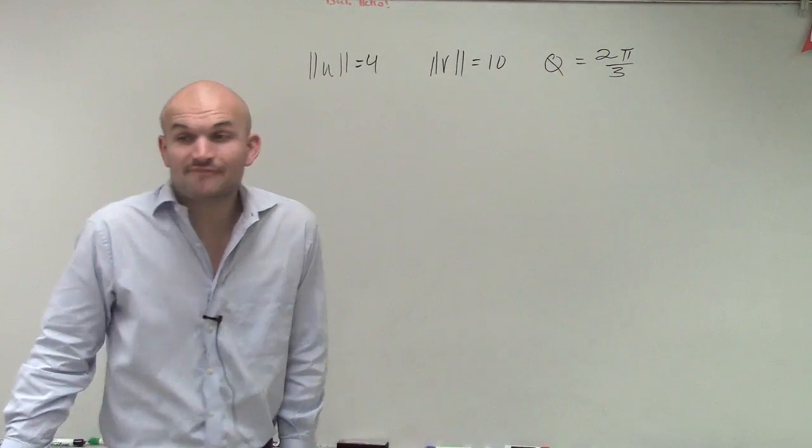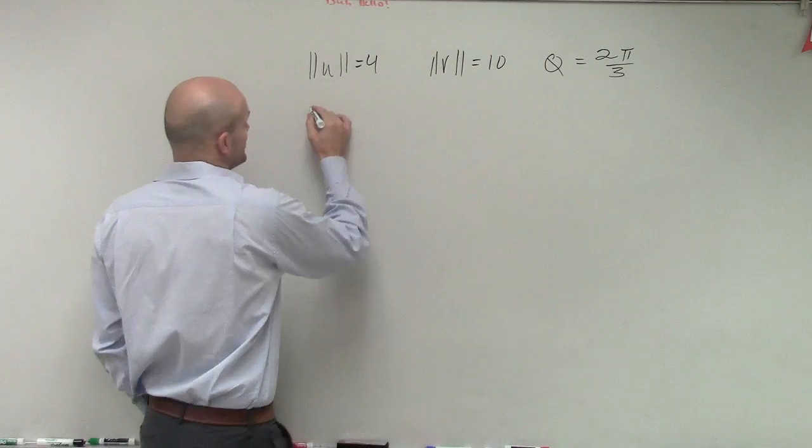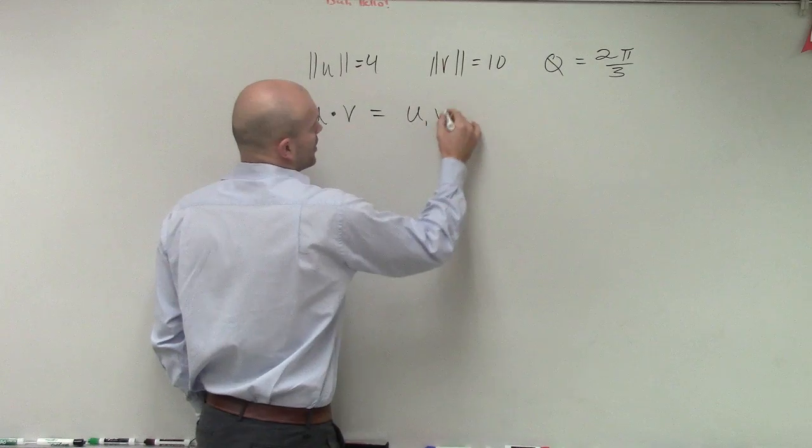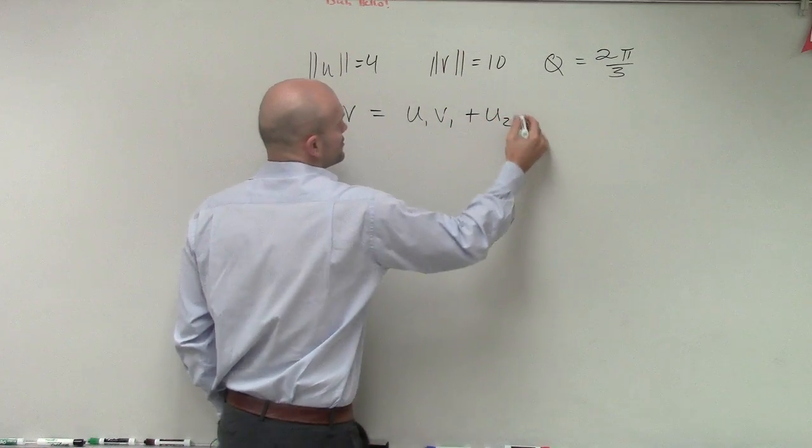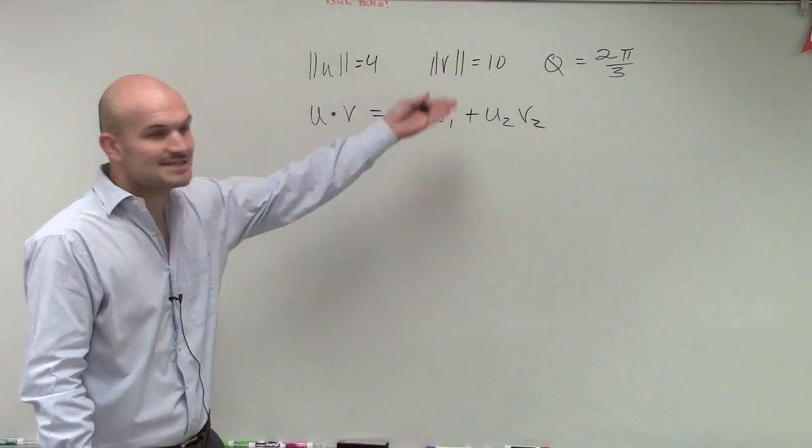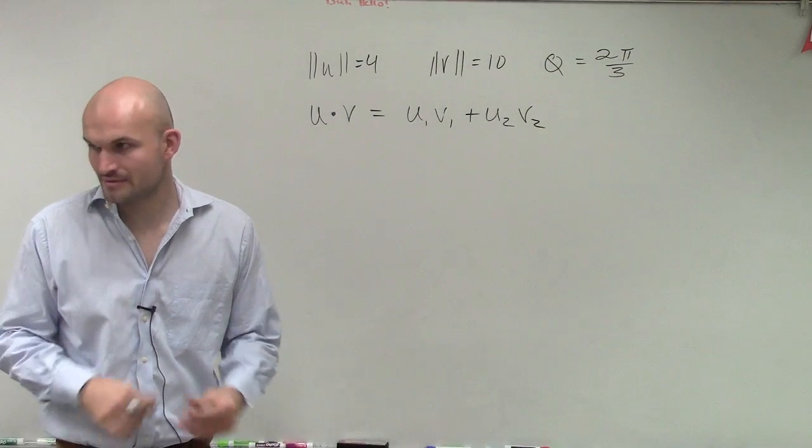Okay, so they said find the dot product, right? The only thing you guys know about the dot product is that it equals u1 times v1 plus u2 times v2, right? That doesn't include anything with theta. Nothing.